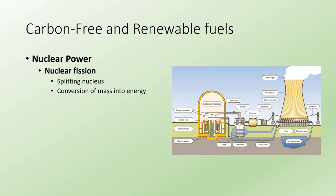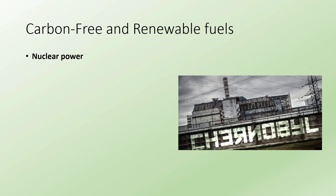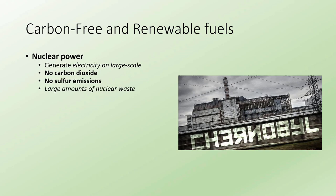Another kind of power is nuclear power. Here on planet Earth we are currently able to do nuclear fission — the splitting of nuclei — and it's the conversion of mass basically into energy. However, this energy itself is not used directly to create electricity. It's still 1800s steam engine technology: heat from the fission reactor is used to turn water into steam, that steam drives a turbine, and that turbine creates the electrical power. One of the good things about nuclear power is you can generate electricity on a large scale. It produces no carbon dioxide and no sulfur emissions.